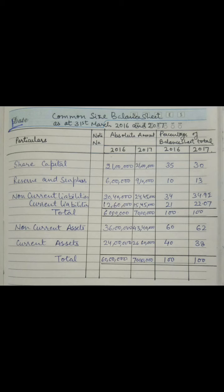The percentage for share capital in 2016 comes to 35 percent. For reserve and surplus in 2016, the amount is 6 lakhs — dividing by 60 lakhs into 100 gives 10 percent. For 2017, reserve and surplus is 9 lakhs 10 thousand; dividing by 70 lakhs and multiplying by 100 gives 13 percent.